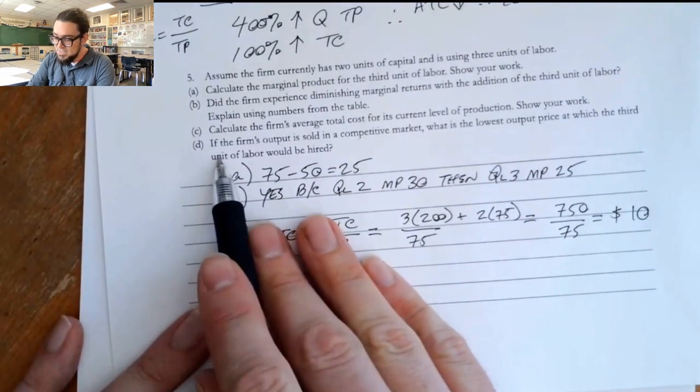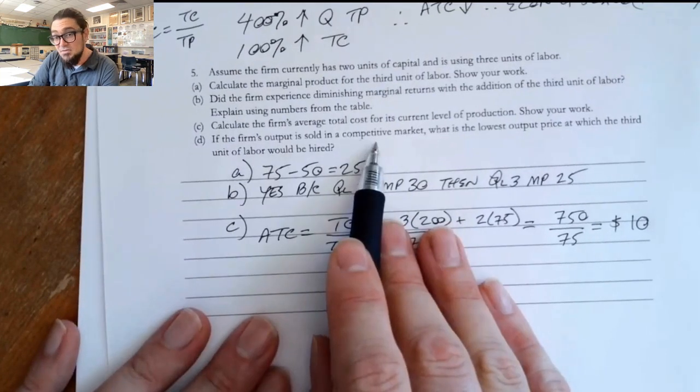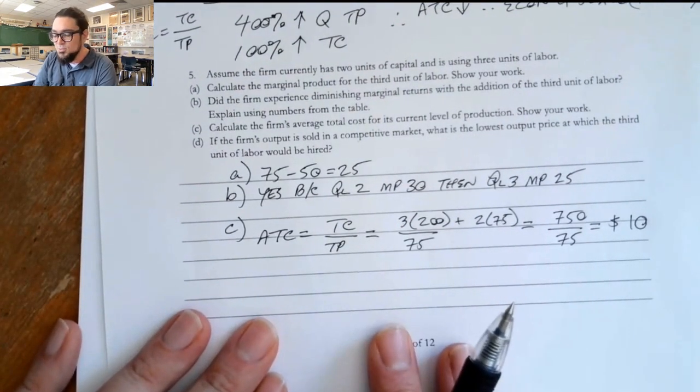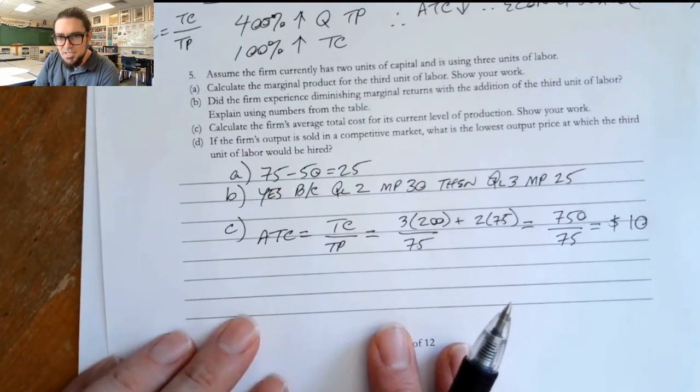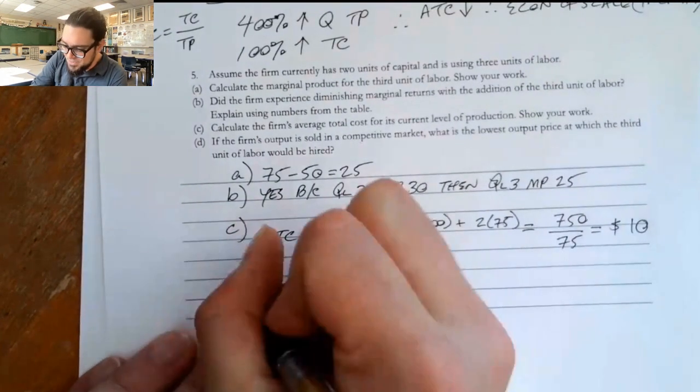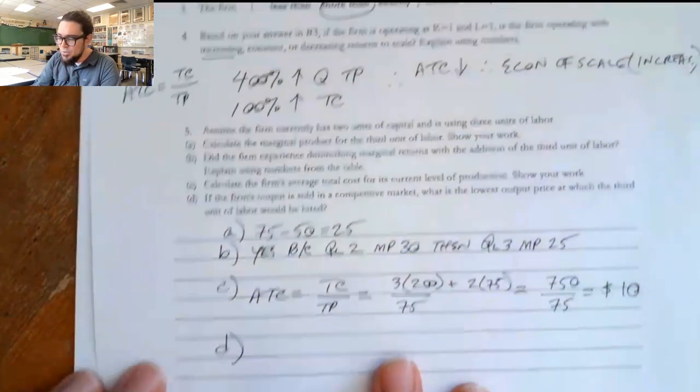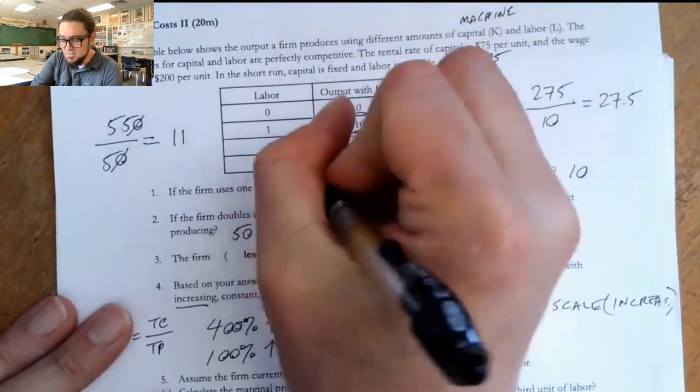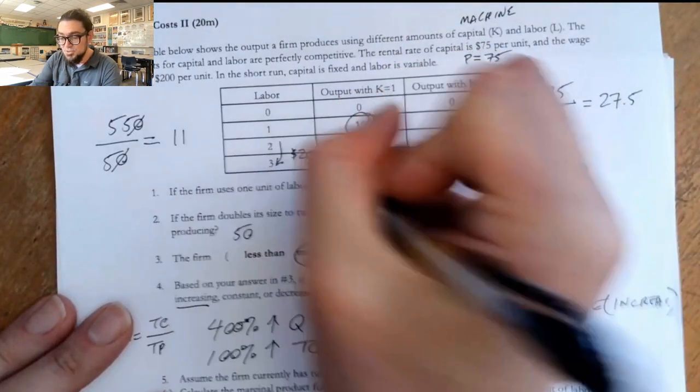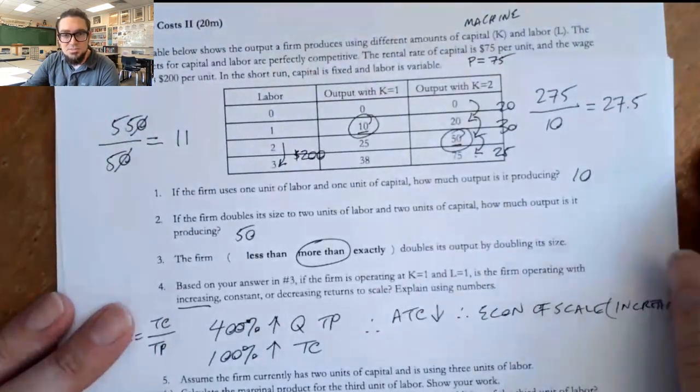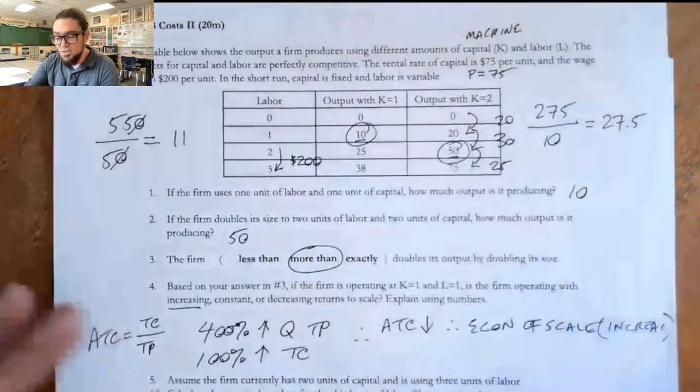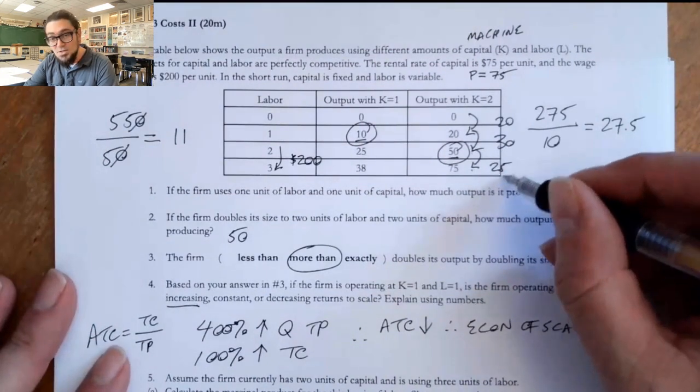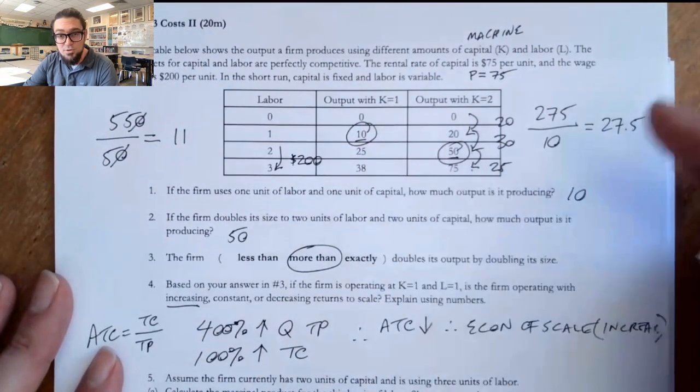And then last but not least, if the firm's output is sold in a competitive market, what's the lowest price at which the third worker would be hired? Well, this is a really tricky question, but it's not that hard. Think clearly for a moment. This third worker, how much do they cost us? They cost us $200. Every worker costs us $200. So when we went from two to three, it cost us $200. How many units did we gain? Well, we gained 25 units from that worker.